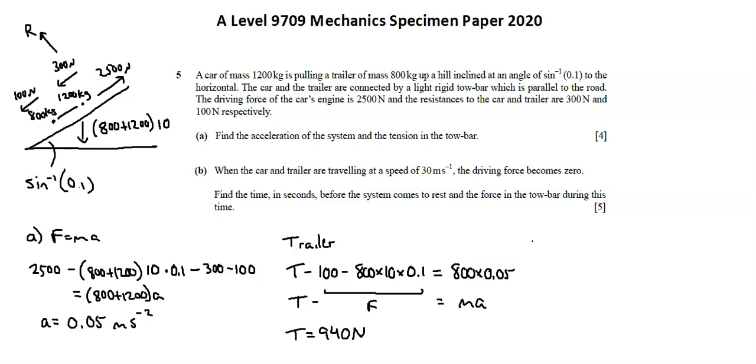For requirement B, to find time, I'm going to use V equals U plus AT. I know V, which is zero, that's rest. I know given the information in B that we're starting at a velocity of 30 meters per second. I don't have an A. A now is not 0.05 meters per second. We have a new acceleration. We're decelerating.